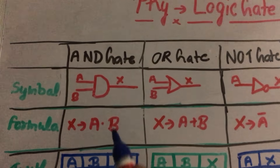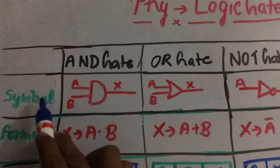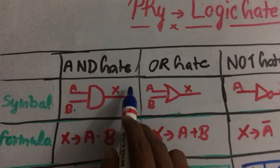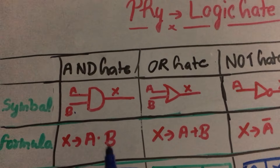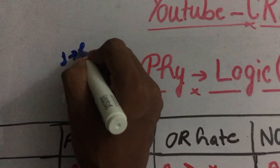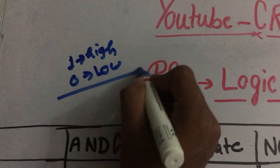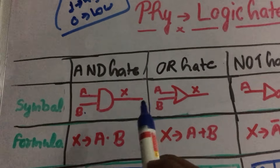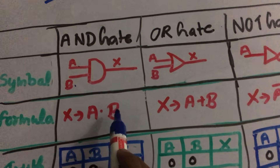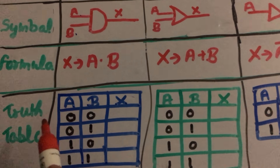First, let's learn about the AND gate. The AND gate has a symbol where A and B are the inputs and X is the output. One important thing to remember: 1 means high value and 0 means low value. The formula for the AND gate is X = A · B.